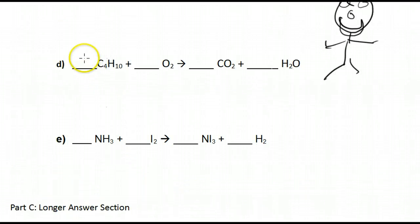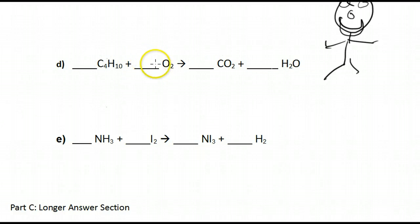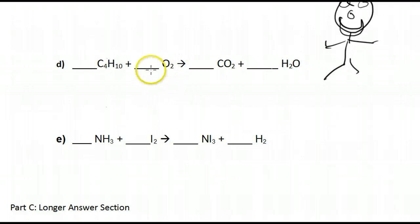Let's do this next one which looks a bit more complicated. One tip: whenever you have a lone oxygen, save it for the very end because it will help you balance things out. So we have four carbons on this side — let's put four on this side.